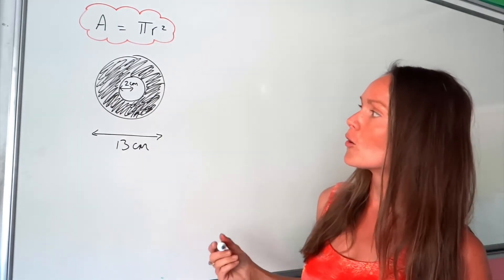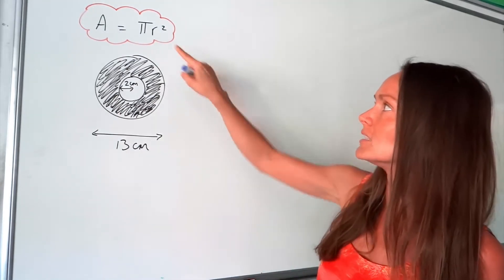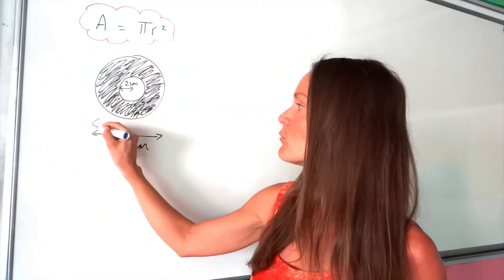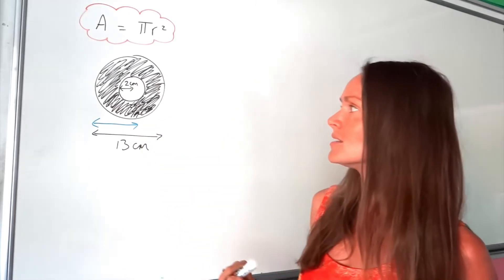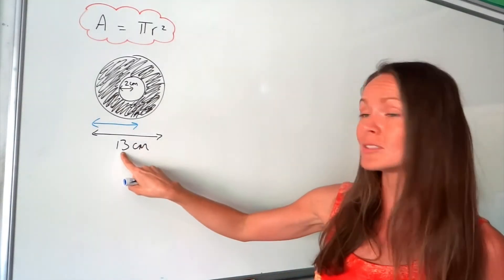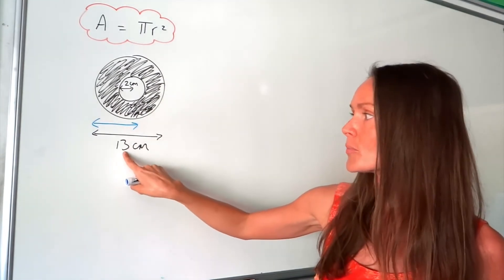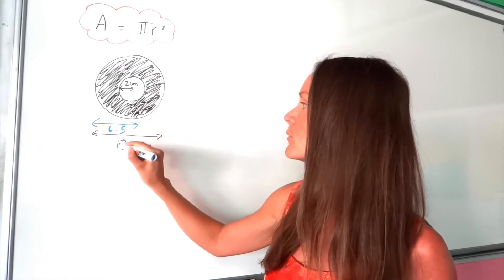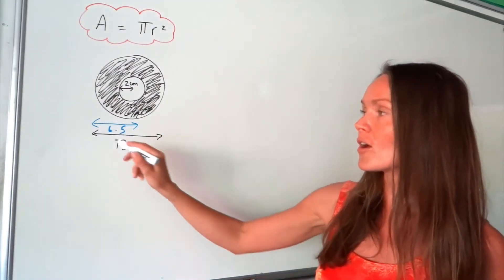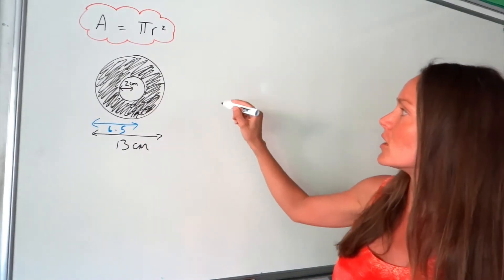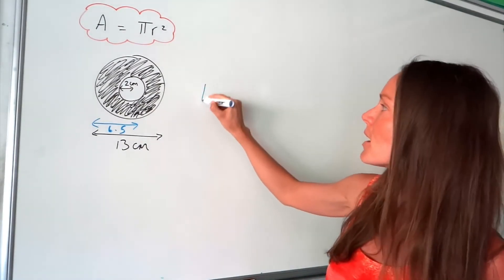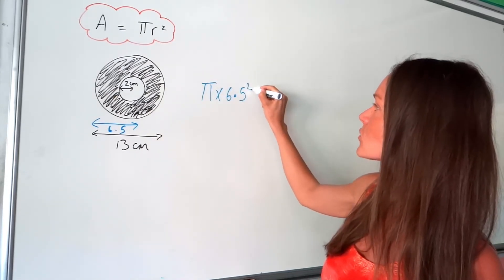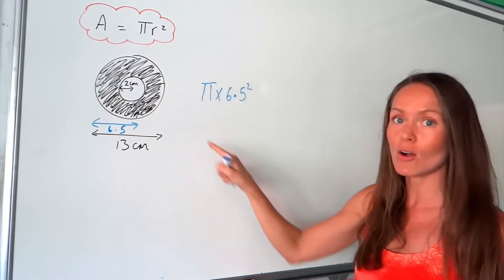To work out the area of the large circle, I need to know the radius. At the moment I've got the diameter, so to work out the radius you just half the diameter — divide by 2. When I divide 13 by 2, I get 6.5. So that's the radius of the large circle. To work out the area of the large circle, we do pi times 6.5 squared — don't forget to square the radius.